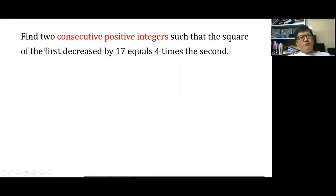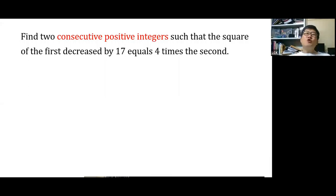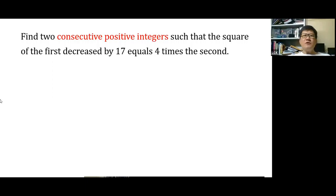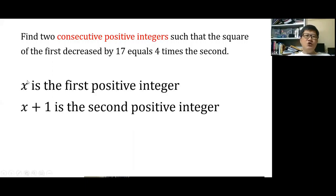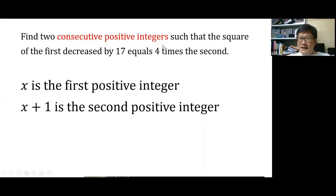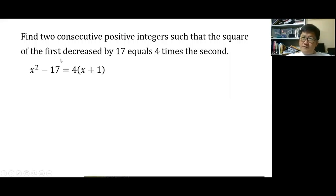Second word problem: find two consecutive positive integers such that the square of the first decreased by 17 equals four times the second. Since they are consecutive positive integers, x is the first and x plus 1 is the second. The equation becomes x squared minus 17 equals 4 times (x plus 1).